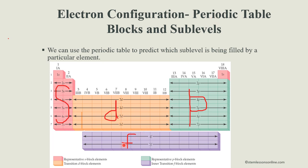The bottom two rows — the purple F block elements — are 2 less than the period number, that is n minus 2. They start from the 6th and 7th periods extended below the table. So 6 minus 2 gives 4F: 4F1 through 4F14. And the 7th period gives 5F: 5F1 through 5F14.